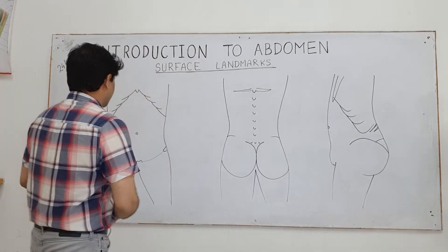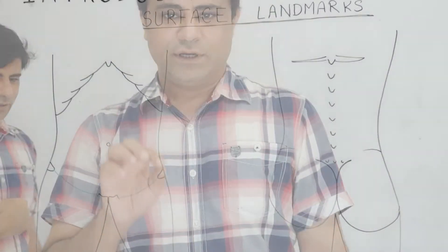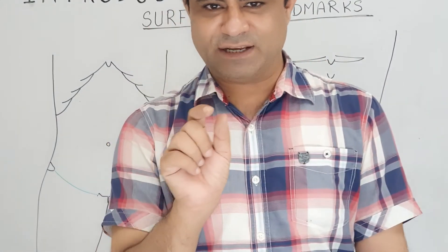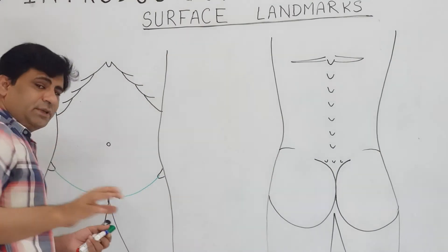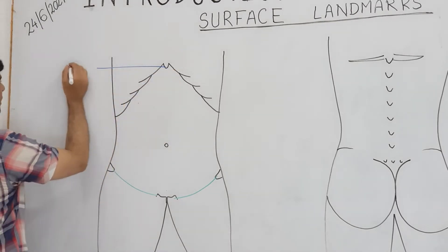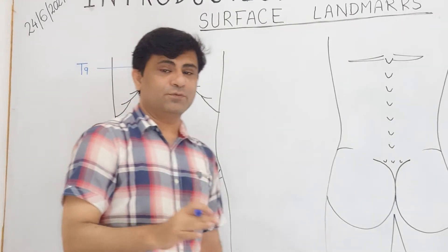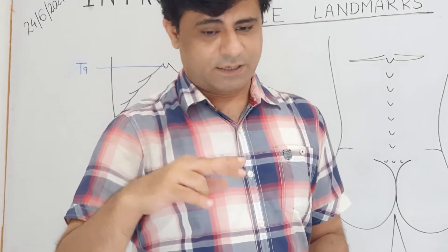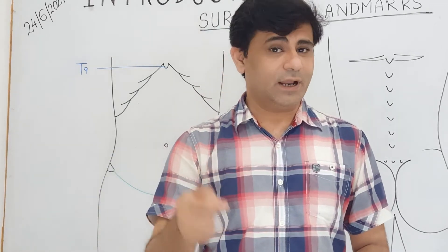Now the bony landmarks - this point here is a small tongue-shaped pointed process, which is sometimes bifid or sometimes has a perforation, and that is the xiphoid process. The xiphoid process lies at the level of T9. This is important for cross-sectional anatomy. If they ask the level of the sterno-xiphoid joint, it will be at the junction of T8 and T9. Xiphoid lies at the level of T9.